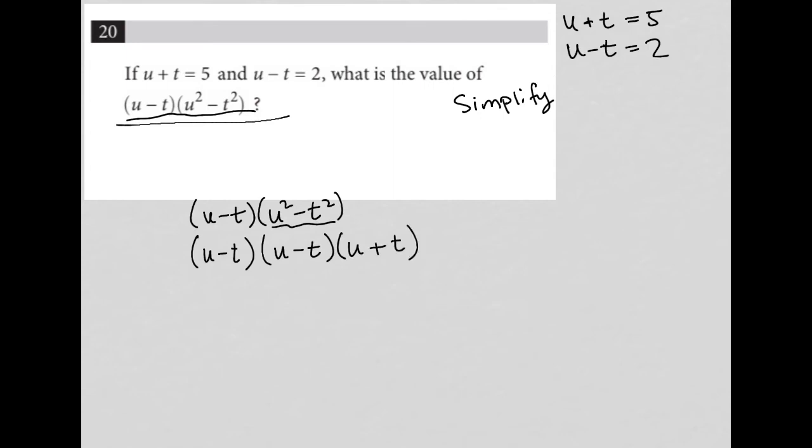And then in addition to simplify, I'm technically just plugging in the information from the question, so PIQ, because I know that u minus t is just 2.